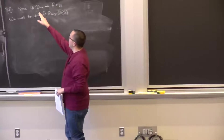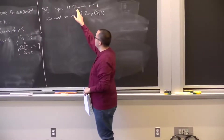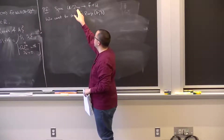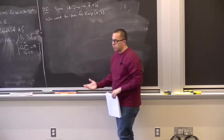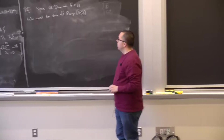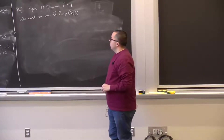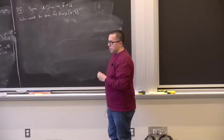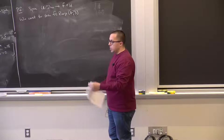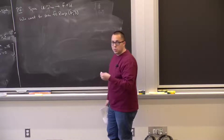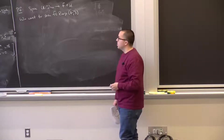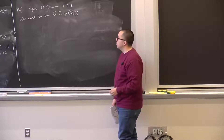We are only assuming that A minus λ applied to uₙ converges to f—we are not a priori assuming the uₙ's themselves converge. In the end, we would like to find a subsequence of the uₙ's which does converge, and then conclude that f is in the range.